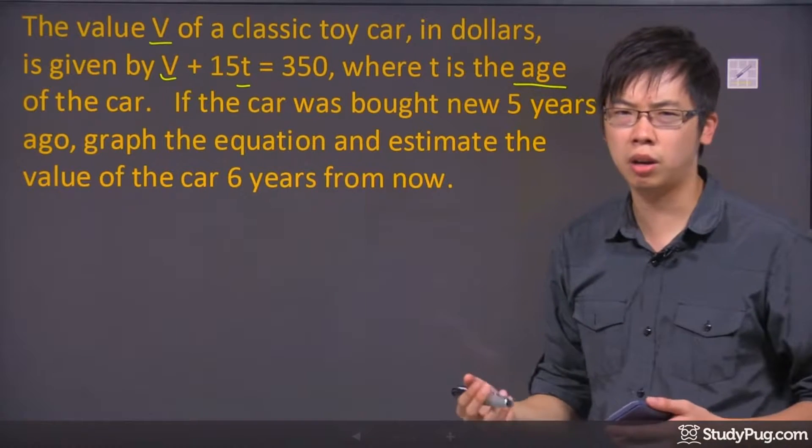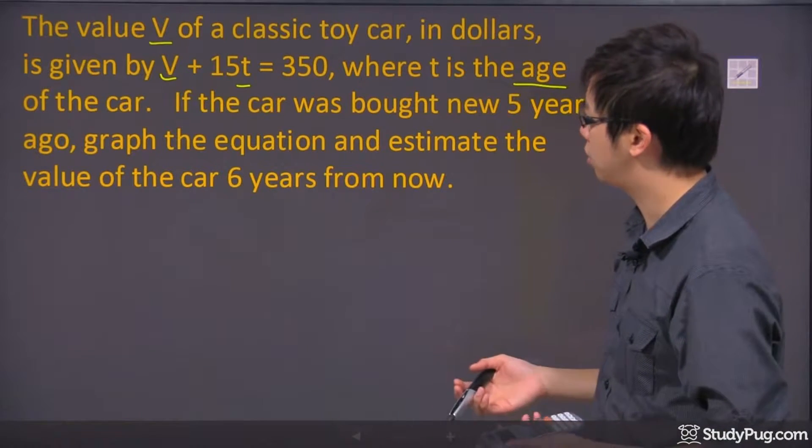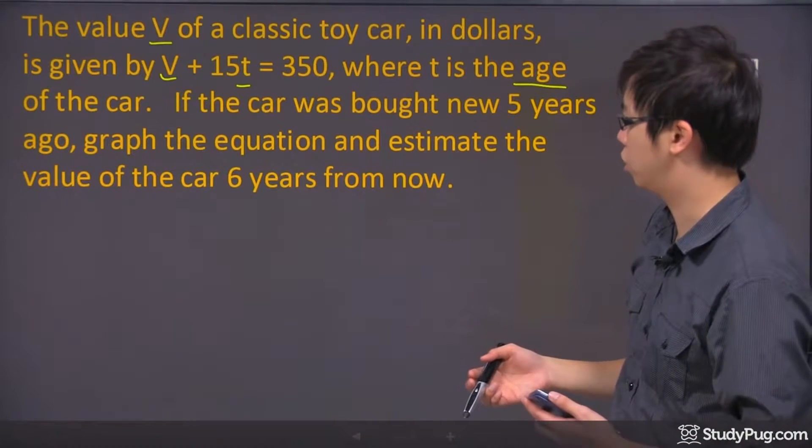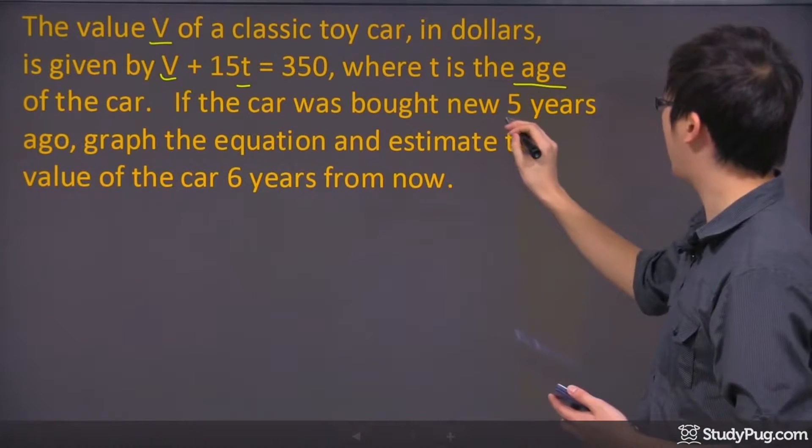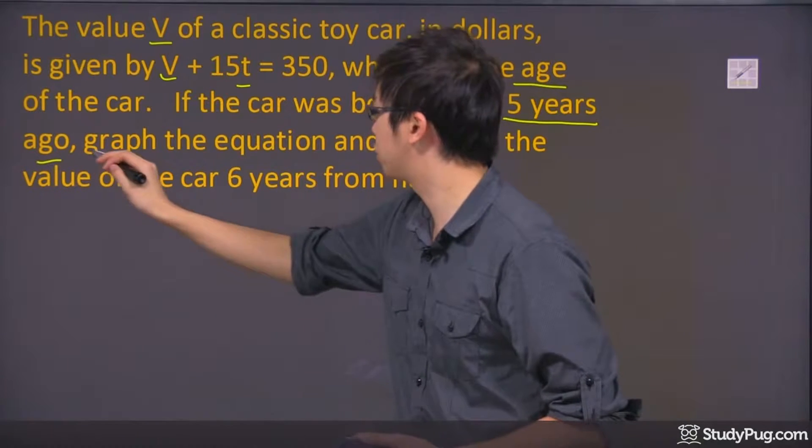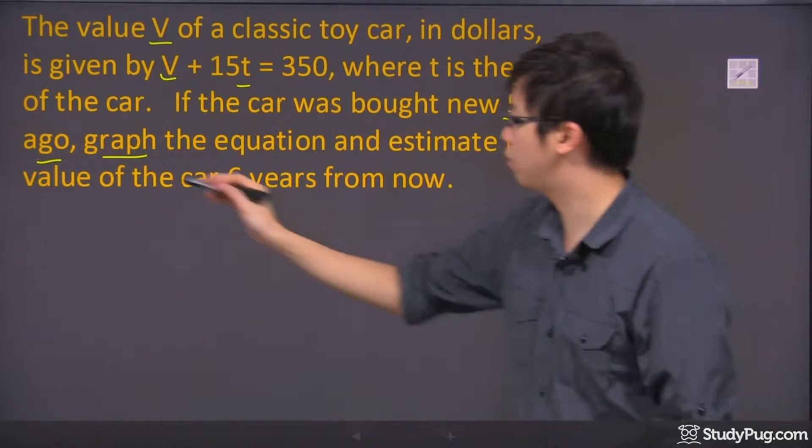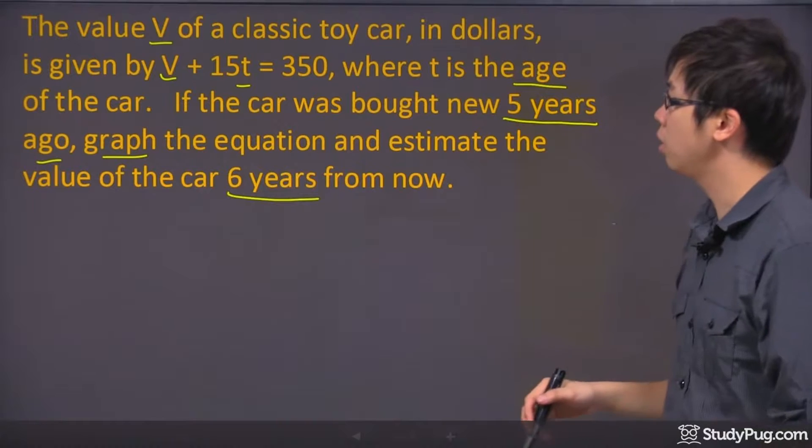So it kind of makes sense, right? Maybe the older it gets, maybe it gets cheaper or not. Let's take a look. If the car was bought about five years ago, you're supposed to graph it and estimate the value of the car six years from now.